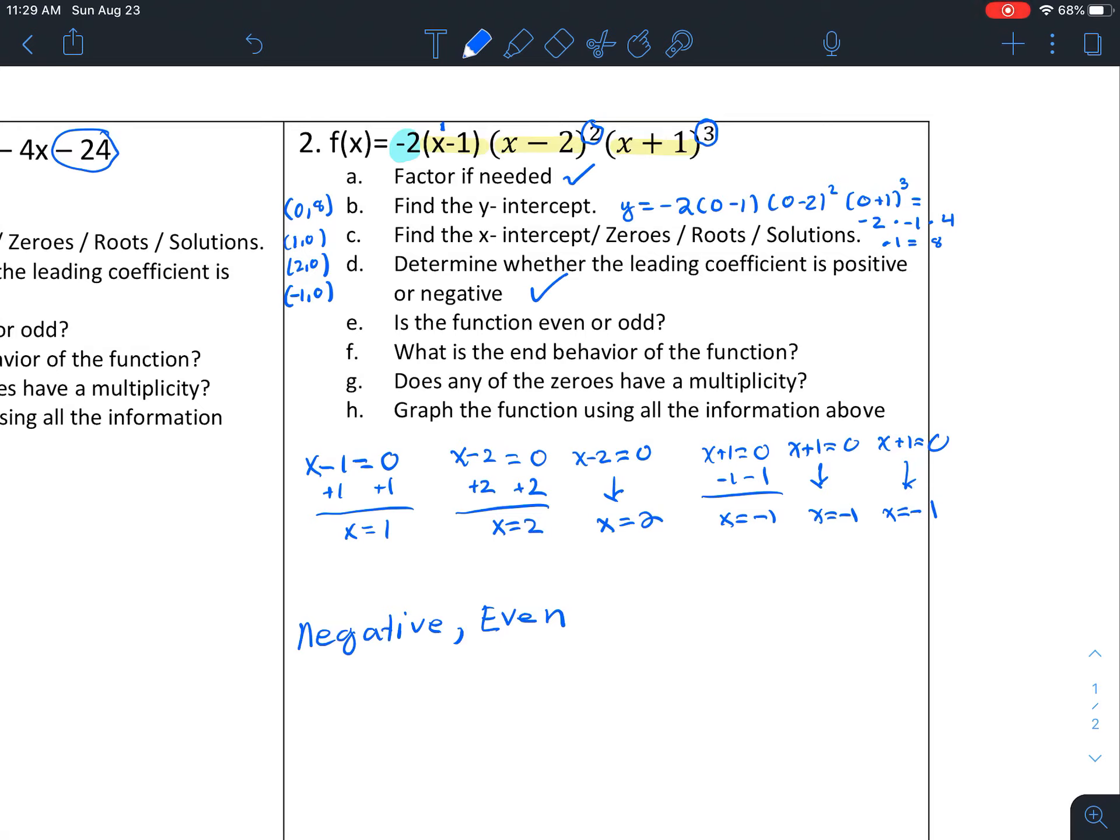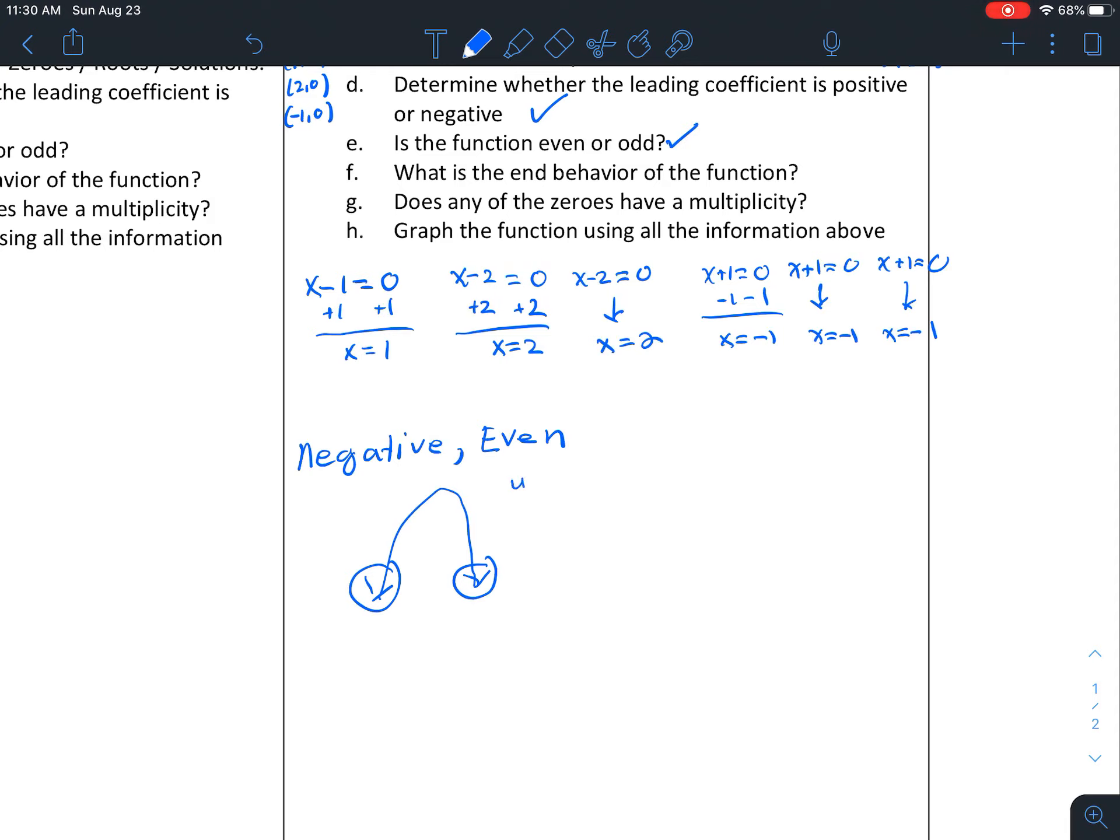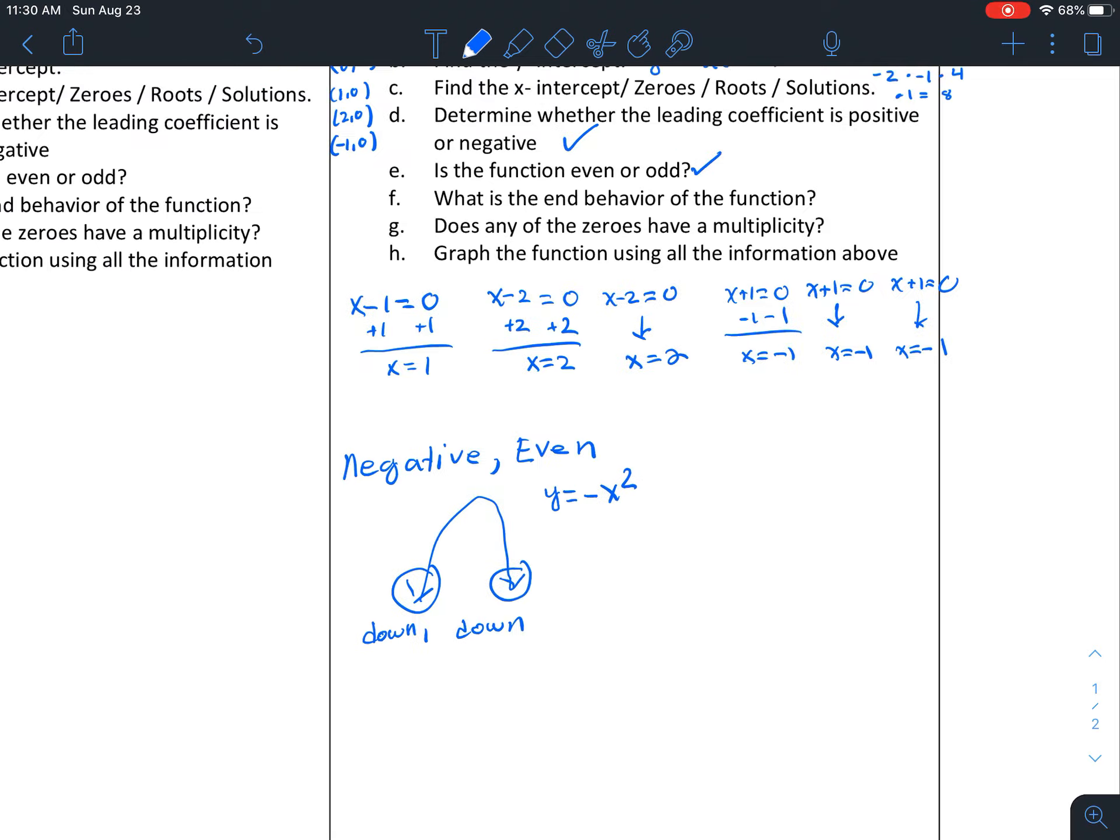Now the question is asking us about the end behavior. I hope that you remember that when something is negative and even, an example to always look at is y equals negative x squared. This is even and negative. And if you see the behavior, it's down, down. So you're going to start down and you're going to end down.